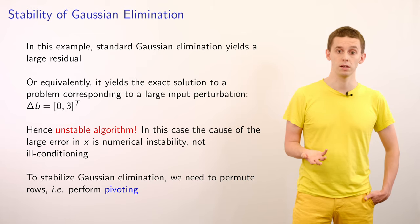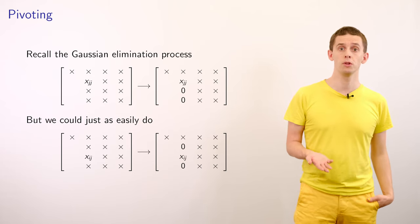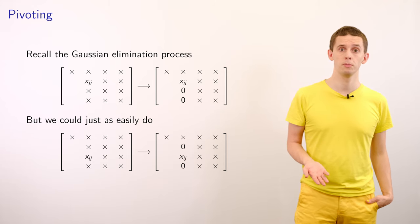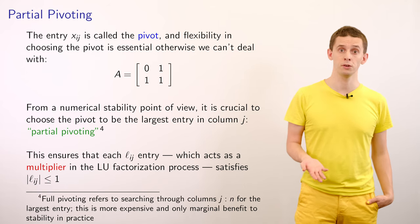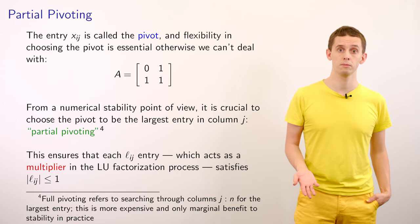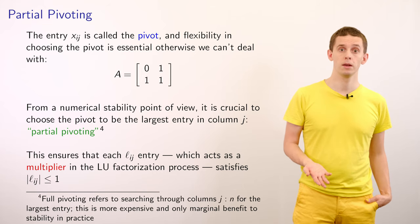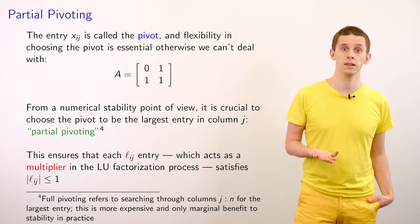We'll now look at a way to stabilize Gaussian elimination using a technique referred to as pivoting, which involves permuting rows of our matrix. In Gaussian elimination, we normally select a term X_JJ on the diagonal and apply row operations to eliminate terms in that column below the diagonal. But we could select a different term X_IJ in that column — referred to as the pivot — and apply row operations to eliminate the other terms. From a numerical stability point of view, we can select pivots of largest magnitude in each column. This procedure is referred to as partial pivoting, and it ensures that entries L_ij in our matrix L have magnitude less than or equal to 1.